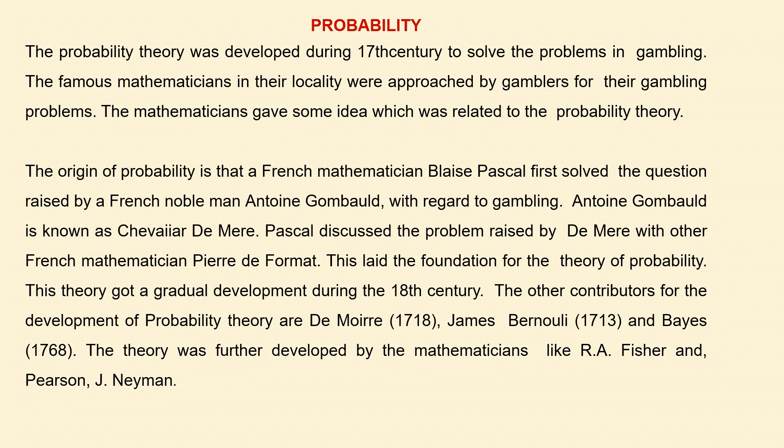The theory got gradual development during the 18th century. Other contributors to the development of probability theory include James Bernoulli (1730) and Bayes' theorem (1768). The theory was further developed by mathematicians like Fischer, Karl Pearson, Neyman, and others.